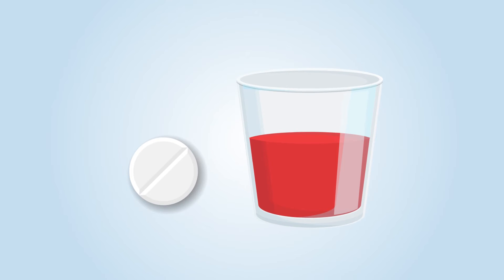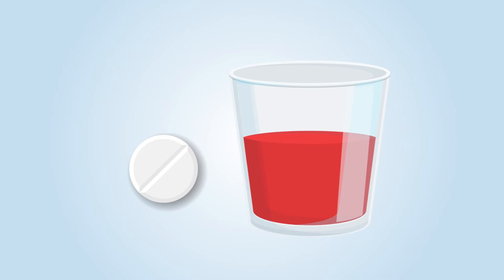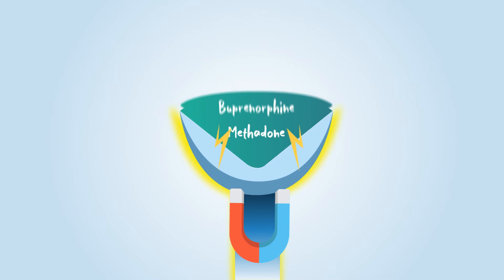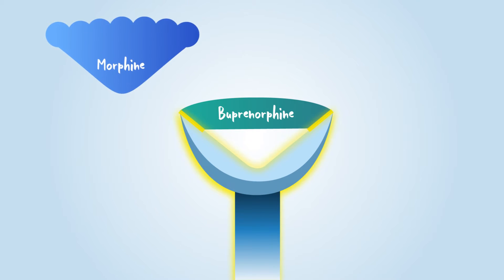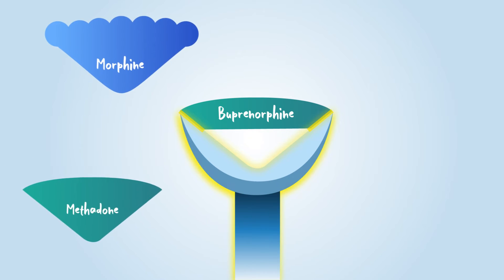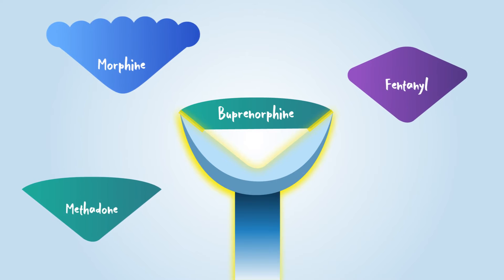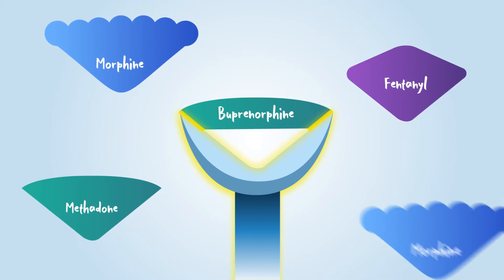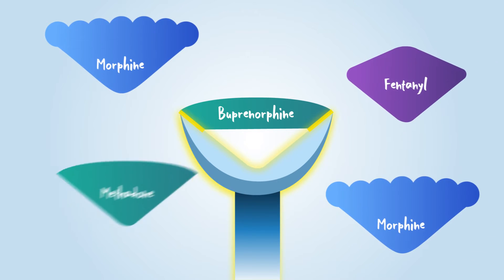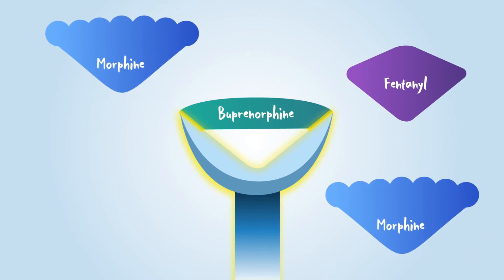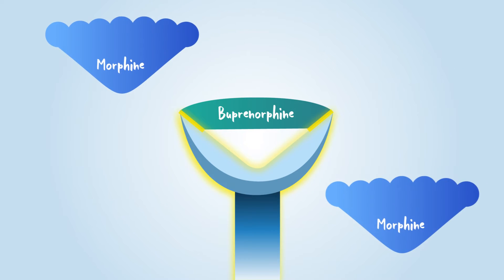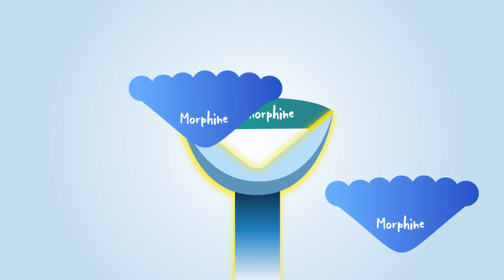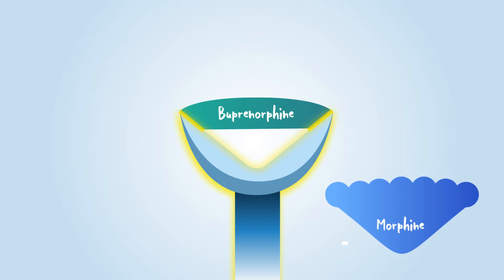Methadone is available in an oral tablet and liquid form. Buprenorphine is a partial agonist opioid. It has a higher affinity for the mu opioid receptor than full agonists, including methadone, and can displace full agonist opioids at the receptor. Similar to methadone, when buprenorphine is bound to the opioid receptor, it may act as a blocker, preventing other opioids from binding.